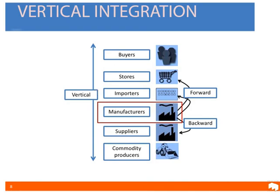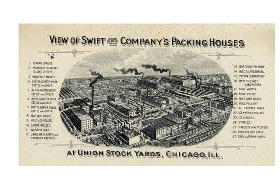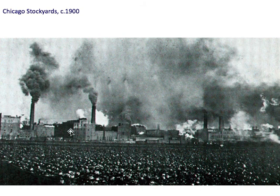Vertical integration means buying up or creating other companies throughout that vertical chain of manufacturing. For example, instead of buying raw material from a separate company, you buy that company or create one that does the same thing. The first example we'll look at is the meatpacking industry, which was one of the industries that pioneered the concept of the assembly line and was focused on controlling all aspects of production.